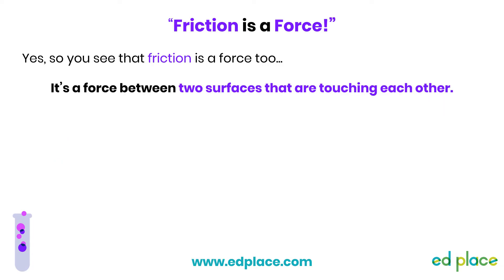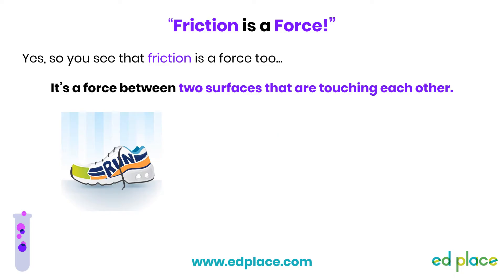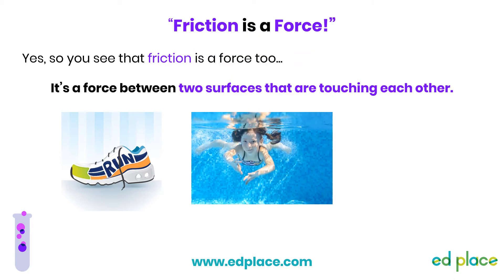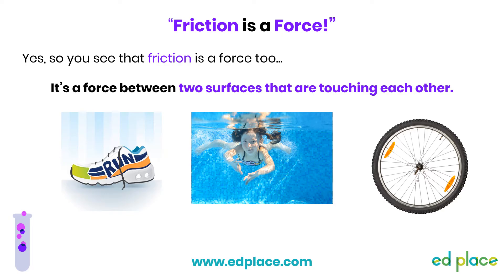That was a reminder of forces, because we're looking at friction, and that's a type of force. It's a force that occurs between two surfaces that are touching each other, so it's a type of contact force. For example, there's friction between your trainers and the ground - you push against the ground when you walk, and friction stops your trainers sliding backwards. When you're swimming, you push against the water, and the friction between the two enables you to move forward. Your bike brakes squeeze against the wheel, and the friction between the brakes and the wheel causes your bike to slow down, and incidentally, this produces a lot of heat, so the brakes get hot.